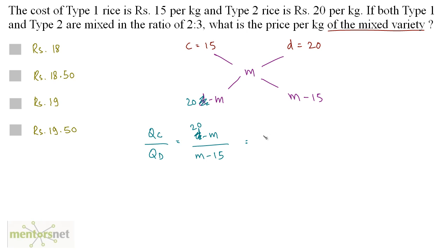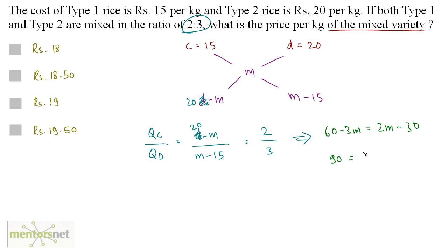According to the allegation rule, QC by QD equals (20 - M) upon (M - 15), and this ratio is given as 2 by 3. Solving: 3(20 - M) = 2(M - 15), so 60 - 3M = 2M - 30. Therefore 60 + 30 = 90 equals 5M, giving M equals 90 by 5, which is 18. The price per kg of the mixed variety is Rs.18 per kg. That is option A.